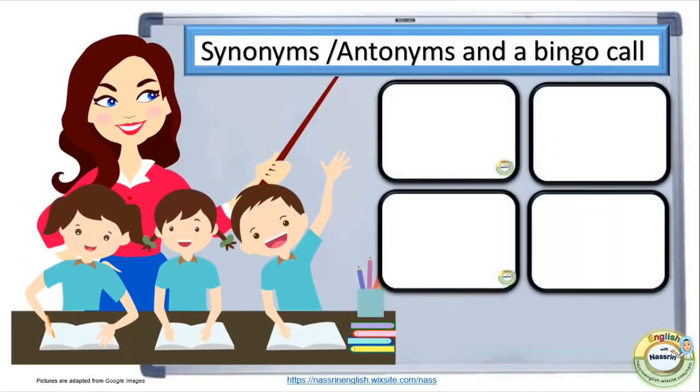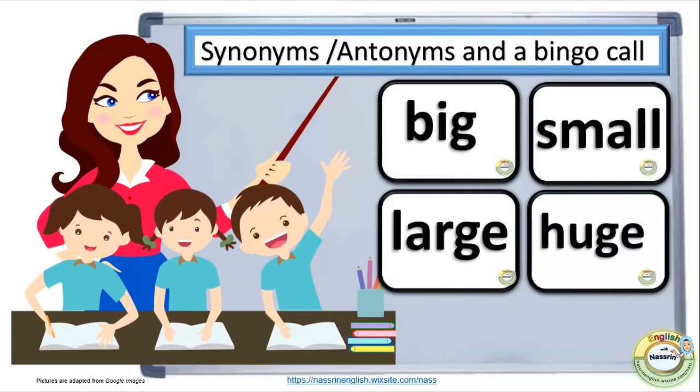The next one is synonyms, antonyms, and a bingo call. Write four words on the board. Three out of four are synonyms and only one is an antonym. Students work in groups and they need to remember which word is an antonym. The group that guesses the word first says the word bingo.